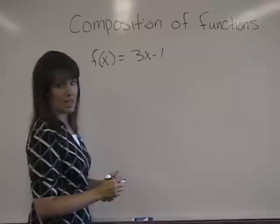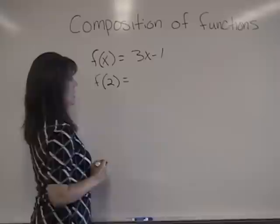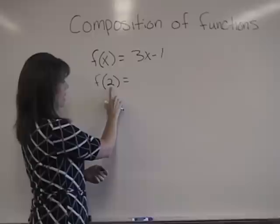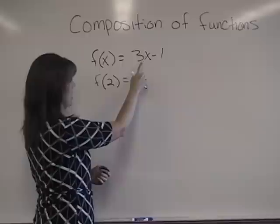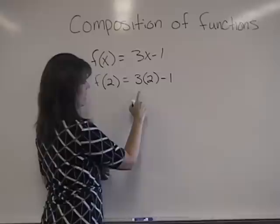We're going to start with the function f of x equals 3x minus 1, and we're going to do a simple evaluation of the function. We're going to see what this function equals when we plug a 2 in for x. So this is f of x, this is f of 2, and that is just denoting wherever we have an x, we're going to put a 2 in.